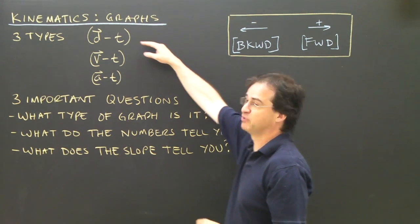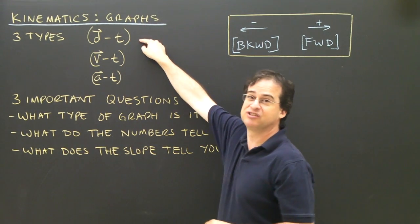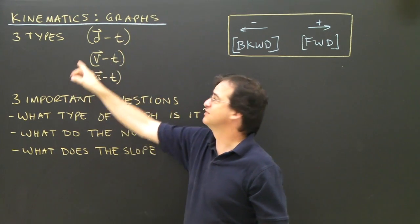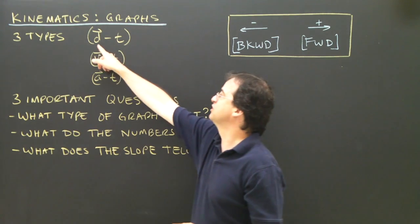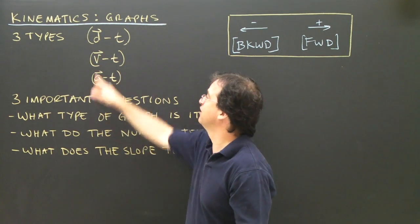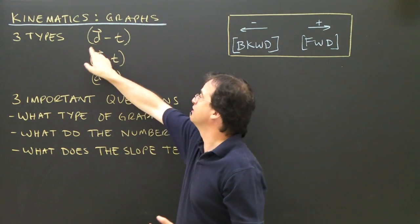What we're going to do is we're going to look at three types of graphs. A position time graph, that's our short form. It's not d minus t, this is just a shorthand way of writing position versus time. And I know I'm using the word position and there's a d here, but that's the way it is.